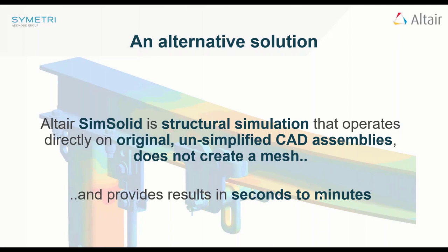SimSolid is not like traditional softwares where you have to simplify geometry in order for the model to be meshed, because meshing is one of the biggest stumbling blocks for any FEA software. With SimSolid, you simply take the geometry as it is — you can export it as a Parasolid or STEP file, or open Inventor or SolidWorks files directly. The biggest difference is that SimSolid doesn't require a mesh.